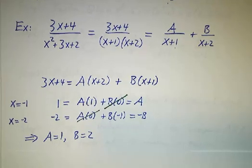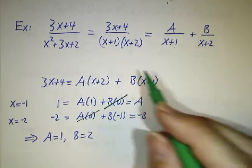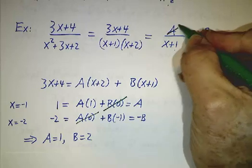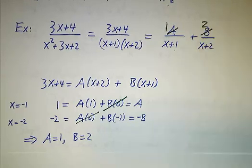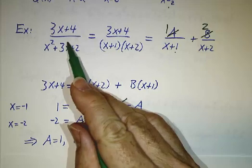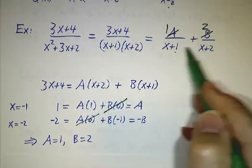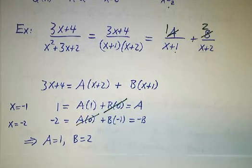So lo and behold, by following the script, we can figure out that A is 1 and B is 2. We've converted this ugly integrand into 1 over x plus 1 plus 2 over x plus 2, and that we know how to handle.